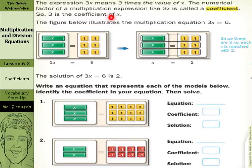So 3 is the coefficient of x. The figure below illustrates the multiplication equation 3x equals 6. We have 3x equals 6, and you can see in the model how we have 1x equals just 2. So write an equation that represents each of the models below.